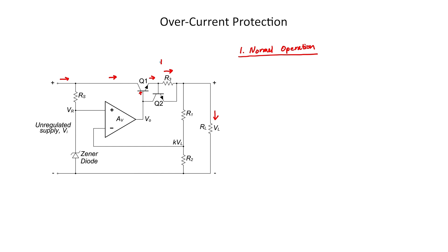I want to consider the voltage across resistor R3 — let's label that V_R. What we're going to do is choose a value for R3 such that transistor Q2 is normally off. Q2 being off means that the base-emitter voltage drop is less than the required voltage to turn on that junction. For a silicon transistor, it turns on somewhere between 0.6 and 0.7 volts. To make sure it stays off, we'll pick 0.6 volts to be safe — if we allow up to 0.7 it might accidentally turn on. So we want V_R to be less than 0.6 volts at all times.